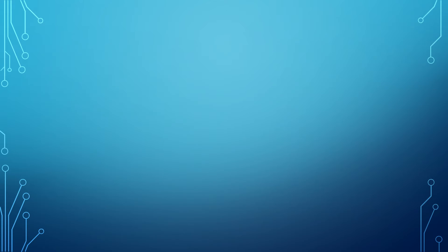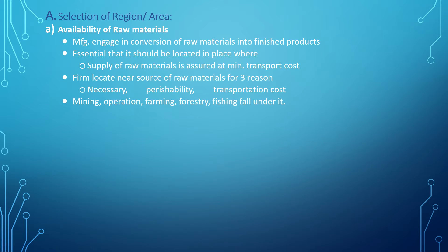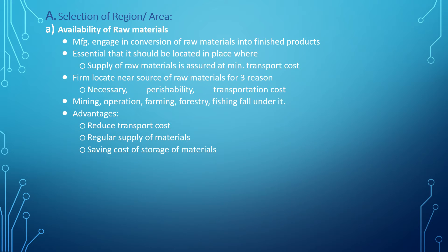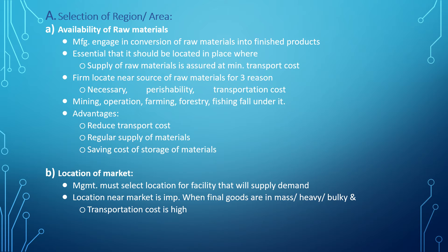For selection of region and area, regarding availability of raw materials: manufacturing involves conversion of raw material into finished products, so it is essential to locate where raw material supply is assured at minimum transportation cost. Locating near sources of raw material is necessary for three reasons: perishability, transportation cost, and operations such as mining, farming, forestry, and fishing. Advantages include reduced transportation cost, regular supply of material, and saving on storage costs.